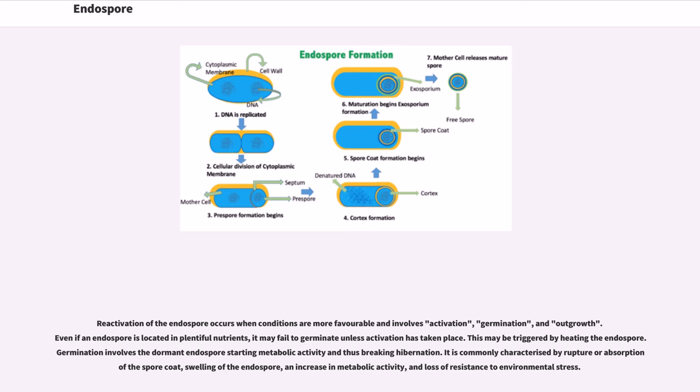Reactivation of the endospore occurs when conditions are more favorable and involves activation, germination, and outgrowth. Even if an endospore is located in plentiful nutrients, it may fail to germinate unless activation has taken place. This may be triggered by heating the endospore. Germination involves the dormant endospore starting metabolic activity and thus breaking hibernation. It is commonly characterized by rupture or absorption of the spore coat, swelling of the endospore, an increase in metabolic activity, and loss of resistance to environmental stress.